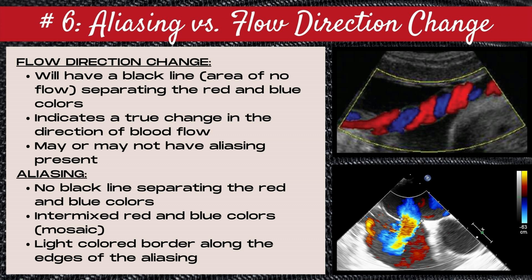The next step in our color Doppler optimization checklist is knowing the difference between aliasing and a true flow direction change. With a true change in flow direction, you're going to see a black line — this black line represents an area of no flow and separates the red and blue colors, indicating a true change in the direction of blood flow. You may or may not have aliasing present within vessels that are displaying a true flow direction change. This is represented by the top image — an image of an umbilical cord in which the umbilical artery and umbilical vein are traveling different directions, with a black line in between each red and blue color representing an area of no flow.